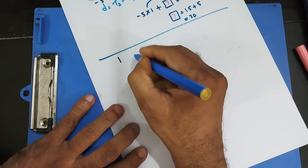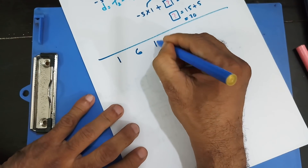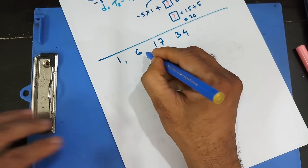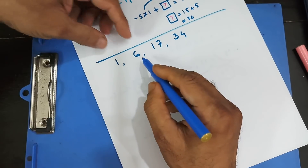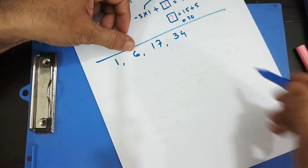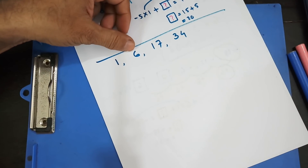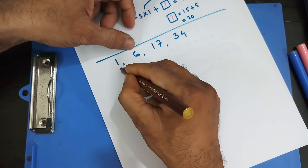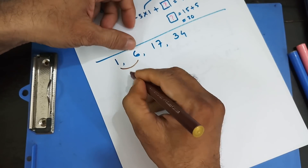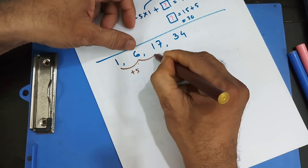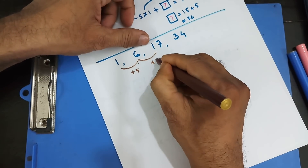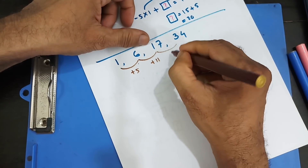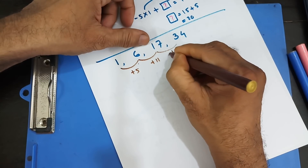Let's say I have this sequence: 1, 6, 17, and 34. If you remember the last video, we try to find out the difference first. So 6 minus 1 — the second term subtract the first term — gives plus 5. Then 17 minus 6 gives plus 11. And 34 minus 17 gives plus 17.